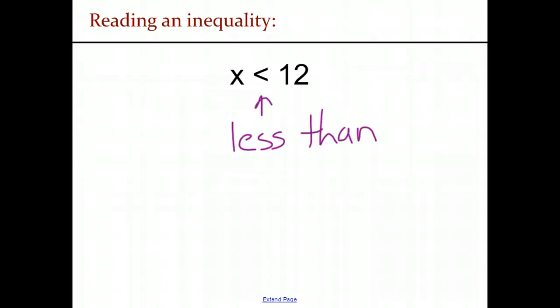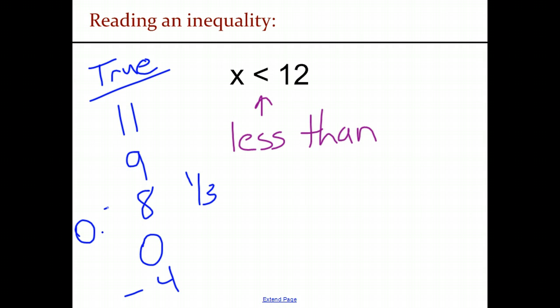Well, some simple examples of x's that are less than 12. We have the whole numbers that we know. This side is going to be true. Things like 11, 9, 8. But we also have other things like 0, negative 4, 1 third, 7 tenths, etc.